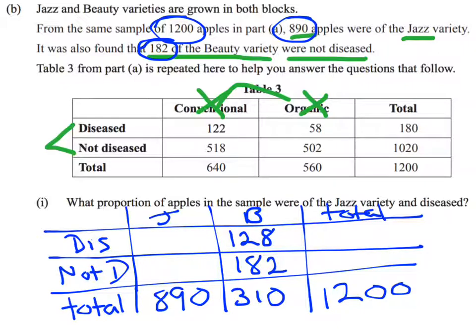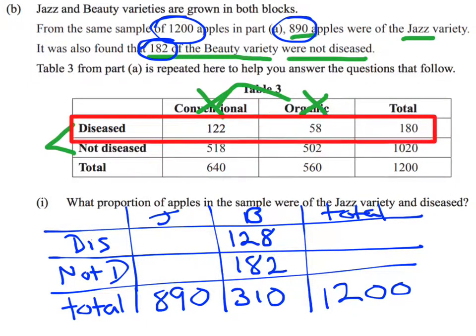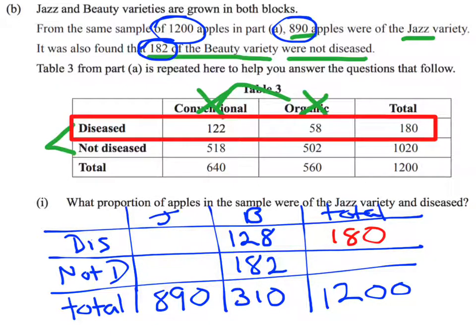Now that I've got there, I think what else am I going to do? I can't work out the other numbers yet. This is where we need that table above. Looking at that table above, I can look at the diseased section and say, oh look, there were 180 apples that were diseased in total. So there are 180 apples that were diseased and 1,020 apples that are not diseased.